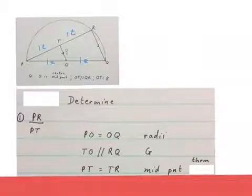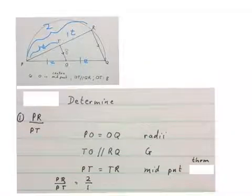Then we can get our answer. PR over PT will be 2 to 1. That whole one is two units to the one unit over there. So it's 2 to 1 is the final answer here.